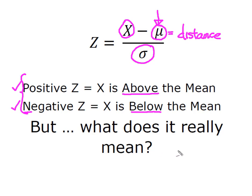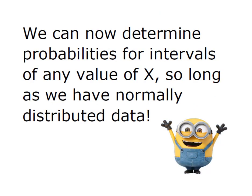So what does this really mean? What it really means is that we can now determine the probability for any interval for any value of x, so long as we have normally distributed data, which is an incredibly powerful tool and infinitely useful in all facets of statistics.